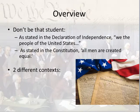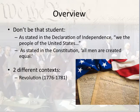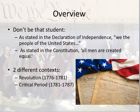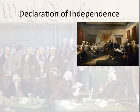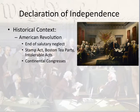We're talking about two different historical contexts here: the Revolution with the critical period thrown in the middle of it, and then the early Republic. Let's start with the Declaration of Independence. The historical context of the Declaration of Independence, of course, is going to be the American Revolution.